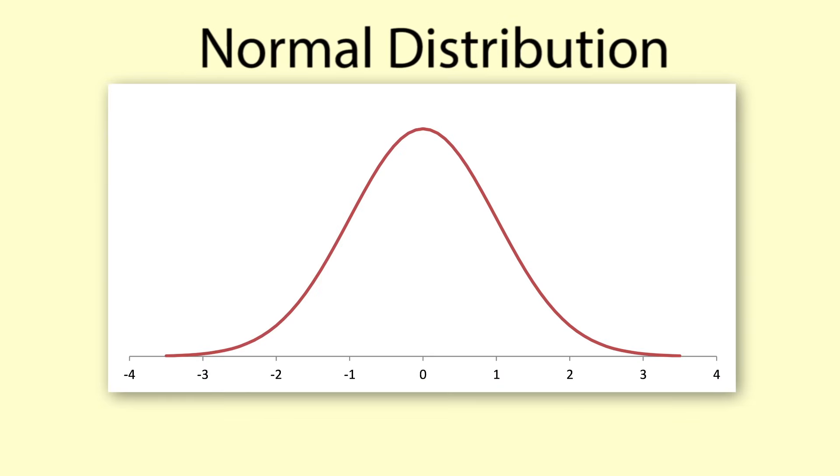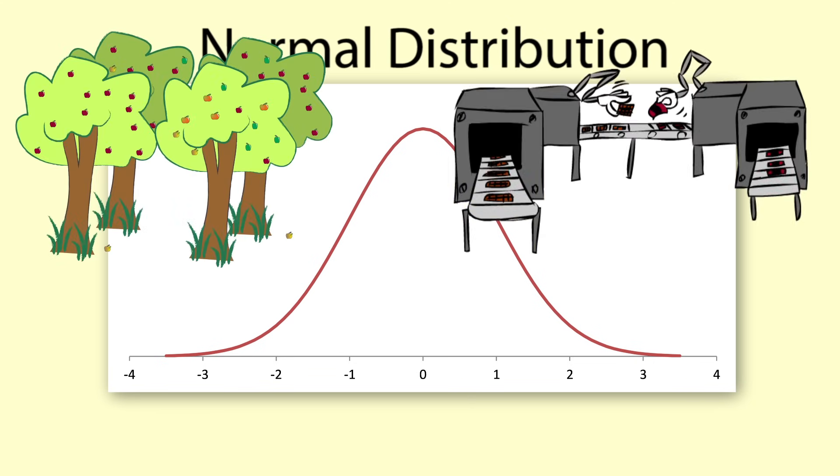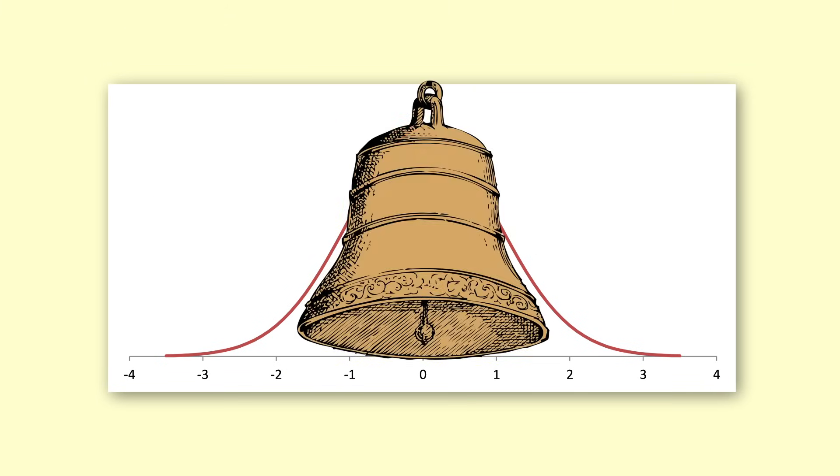The normal distribution is really good for modelling many natural processes, manufacturing processes and human endeavours. You have probably seen its bell shape many times.